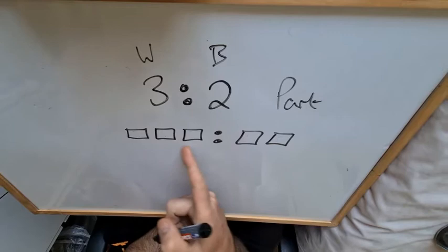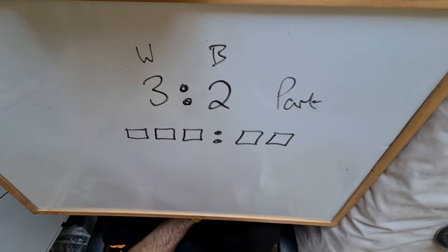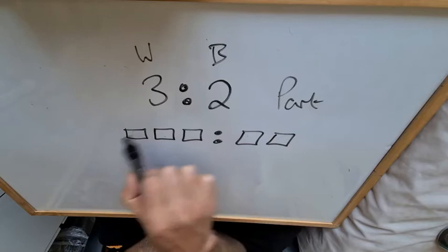What we're talking about right there's three parts here and there are two parts here. Now as you know, a fraction, the denominator is the number of equal parts. And by definition, these parts must be equal, otherwise this is not a ratio, this is not correct.